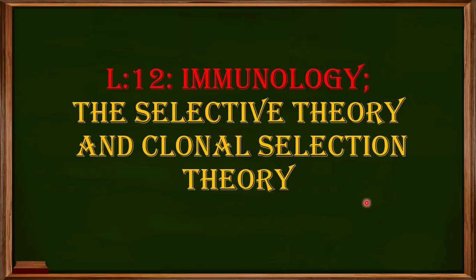Welcome back to this next video — this is the 12th video in the series on immunology. In my previous video, I told you how the immune system recognizes foreign particles or pathogens. In explaining the concept of recognition of pathogens, antigens, or foreign material by the immune system, two theories were proposed: the selective theory and the instructional theory. In this video, I am going to focus on the selective theory, suggested back in the 1900s.